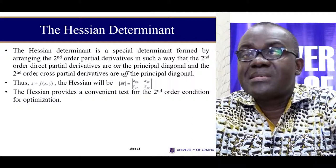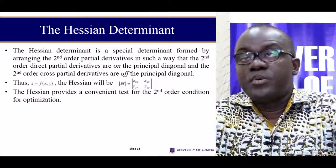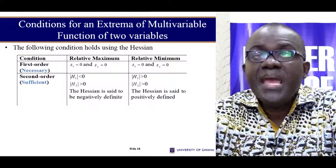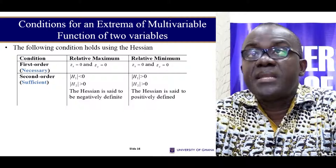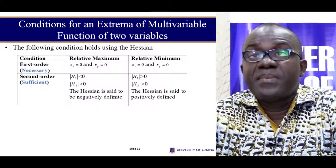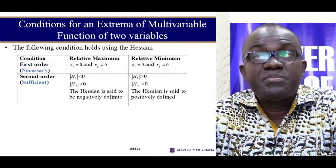For a simple function with two variables, we have the Hessian as defined here. If we go back and look at this formula, we can then have these conditions defined using the Hessian. The first order — there is no change. The second order, we have just expressed them nicely using the Hessian determinant.